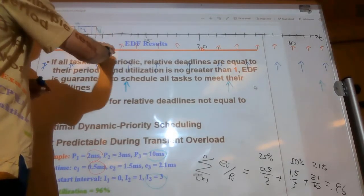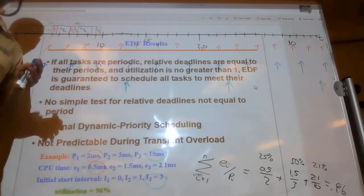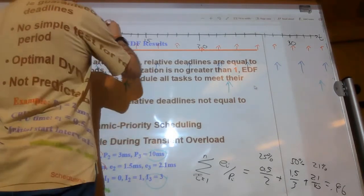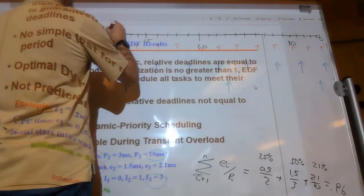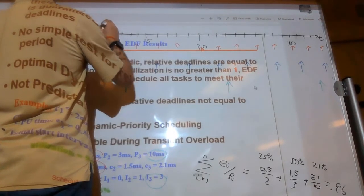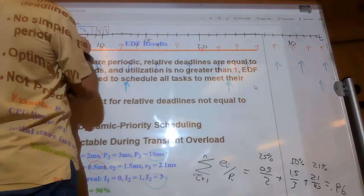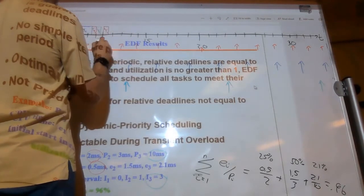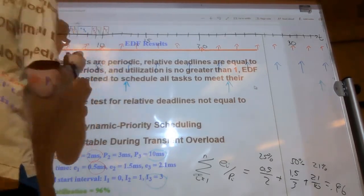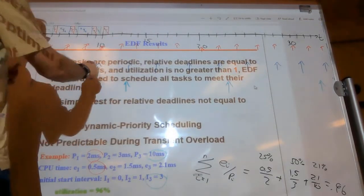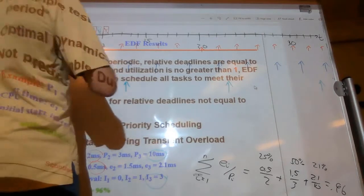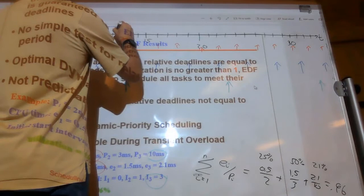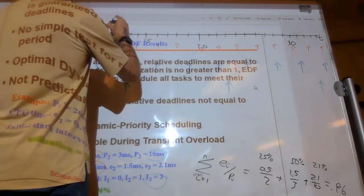We do nothing until the next release point when two tasks get released again. Which one has the earliest deadline? We run task one first — this is the sixth instantiation. Then the fifth instantiation? — in any case, it's done. We then start running task two, which runs for one and a half milliseconds. This is T2 instantiation four, and it's done.